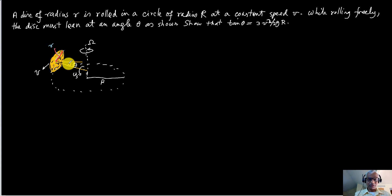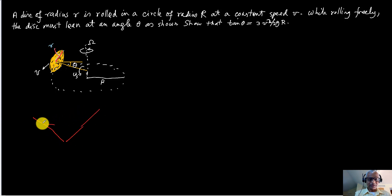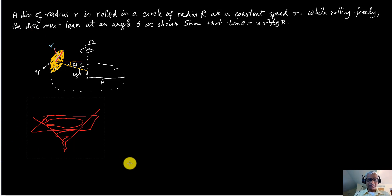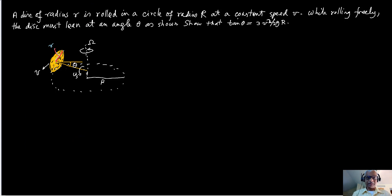You might have seen this in science museums. Instead of flat, it usually has a cup shape and you roll a coin in it; it goes around in a circle and eventually loses energy and falls down. So this is one of those setups. It doesn't show the leaning clearly, but the disk is leaning at an angle.